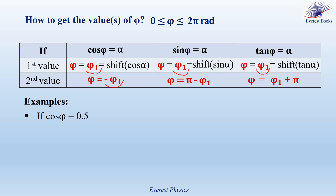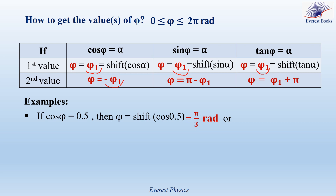If cosine phi equals 0.5, then the first value of phi is obtained by pressing shift cosine 0.5 on the calculator, which gives phi over 3 radians. The second value of phi is equal to minus the first value, so it is equal to minus pi over 3 radians. So cosine of pi over 3 or cosine of minus pi over 3 radians is equal to 0.5.